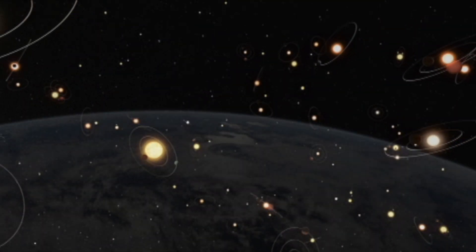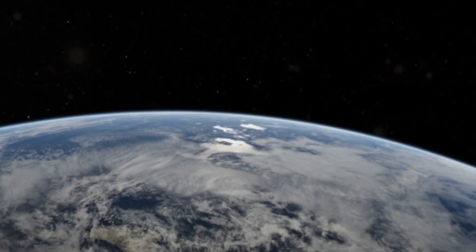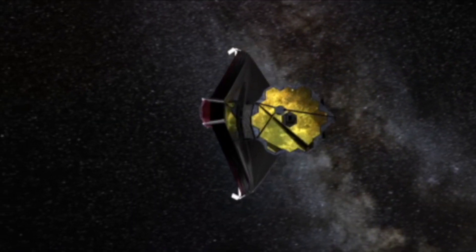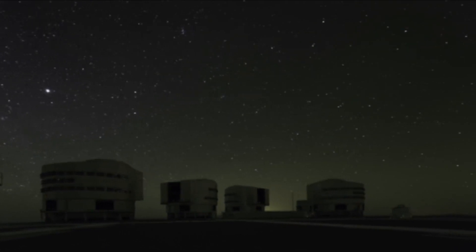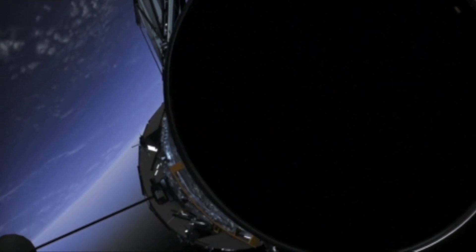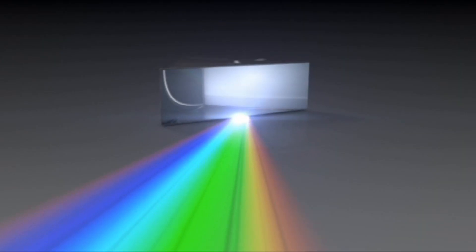In addition to studying planets outside our solar system, scientists want to learn more about our own home. JWST complements NASA's other solar system missions, including those observatories on the ground, orbiting Earth, and in deep space.